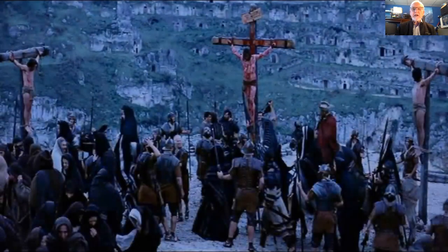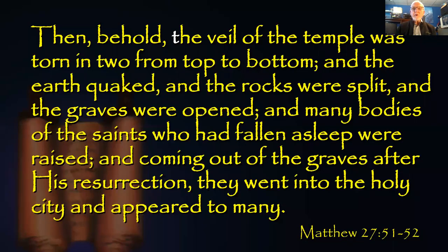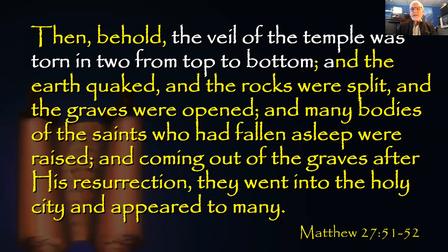So Jesus was on the cross. Then, behold, the veil of the Temple was torn from top to bottom. That was a sign for us. What was happening? The Temple Veil torn from top to bottom indicates only God could have done it. This veil was of great length and great weight — for anyone to tear it in human strength was impossible. But God tore it down.